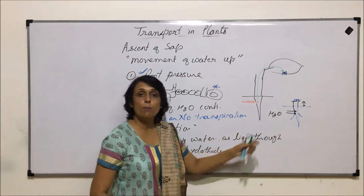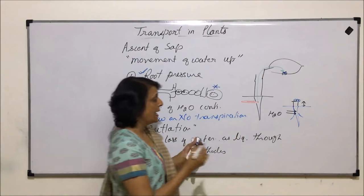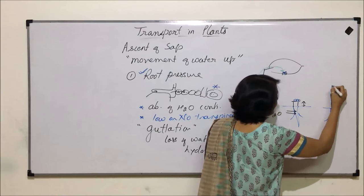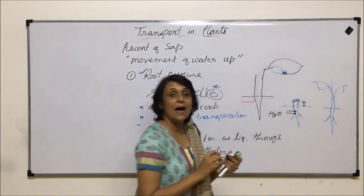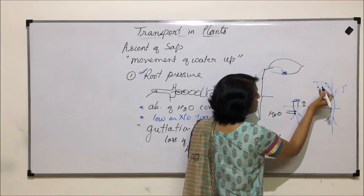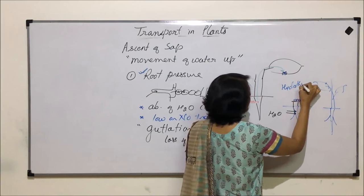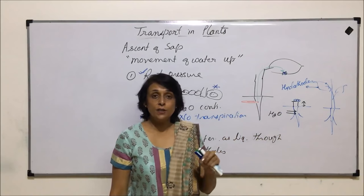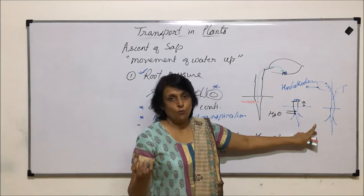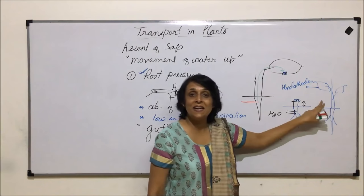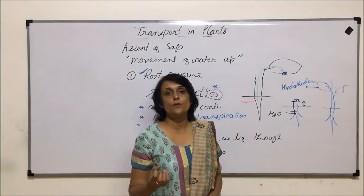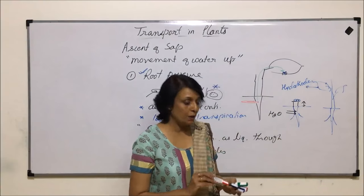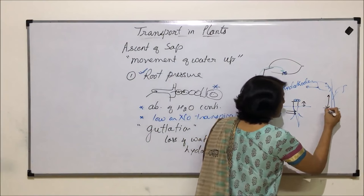If we take a proper rooted herbaceous plant with leaves, on the margins of these leaves there are openings known as hydathodes. This normally happens during winters and early mornings — the entire night water is continuously moving in, root pressure is created. When the sun rises, the opening of stomata takes some time; they open a little later in the morning. Till that time, transpiration has not begun, and because of root pressure the water has risen by a few centimeters.